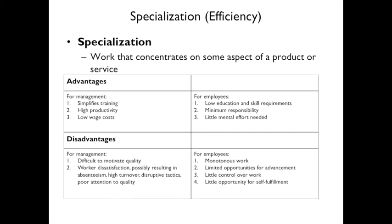In our burrito making example, the person at the beginning of the line always stays at the beginning of the line and gets really good at that part. The person at the cash register always stays at the cash register — they specialize in that role.